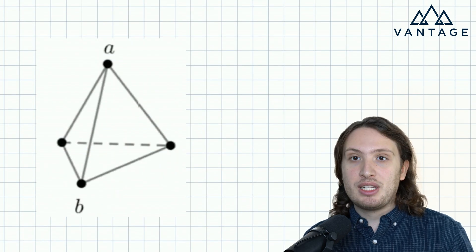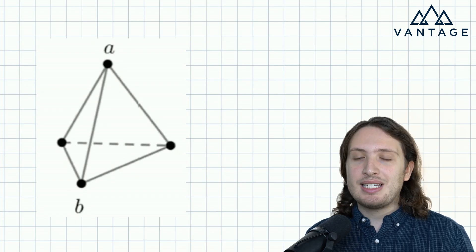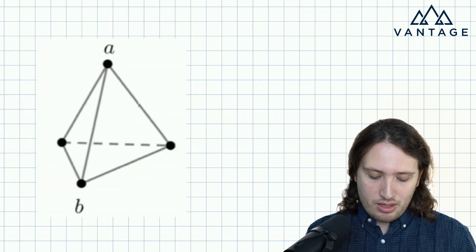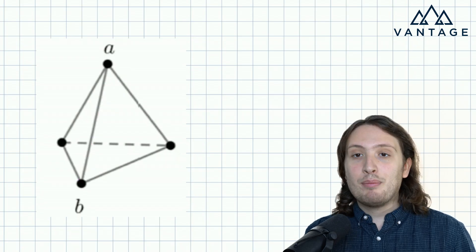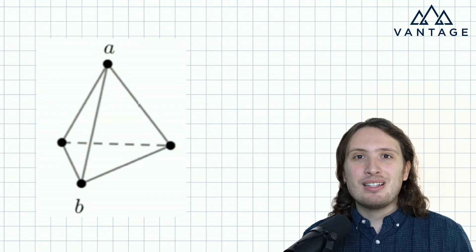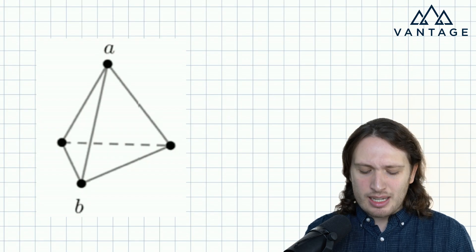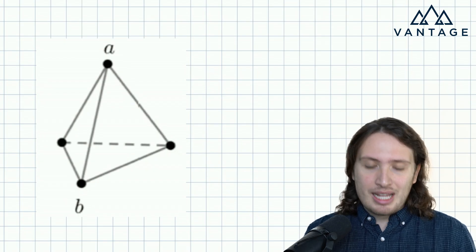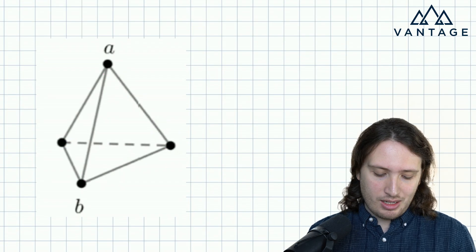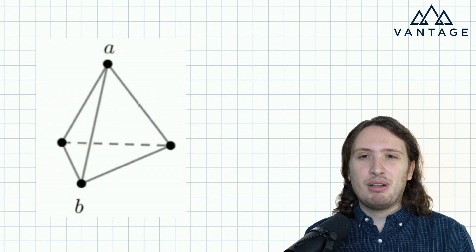We'll begin with the first arrangement, which is the simplest. This looks really quite complicated — there are lots of different routes we could imagine taking through the circuit. If you imagine you're an electron, you could go this way, or that way, or that way. The complexity is the number of branches, the number of different routes. It's so important to show the interviewer that you can identify what it is about the problem that makes it challenging — it's the complication of how many different routes there are and the fact that they have different lengths. Some routes go through two resistor wires, whereas others go through just one.